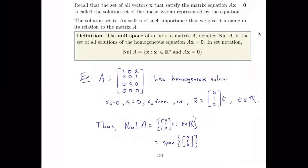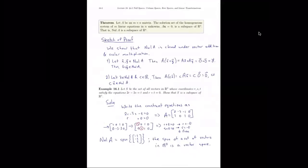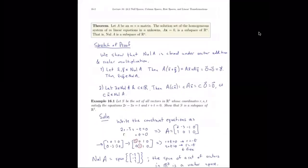Notice that the null space of A is the span of a set of vectors. The span of a set of vectors is a subspace — it has the zero vector, it's closed under vector addition and scalar multiplication, as we saw in section 4.1. Given that, we could probably find a shortcut proof for the upcoming theorem.